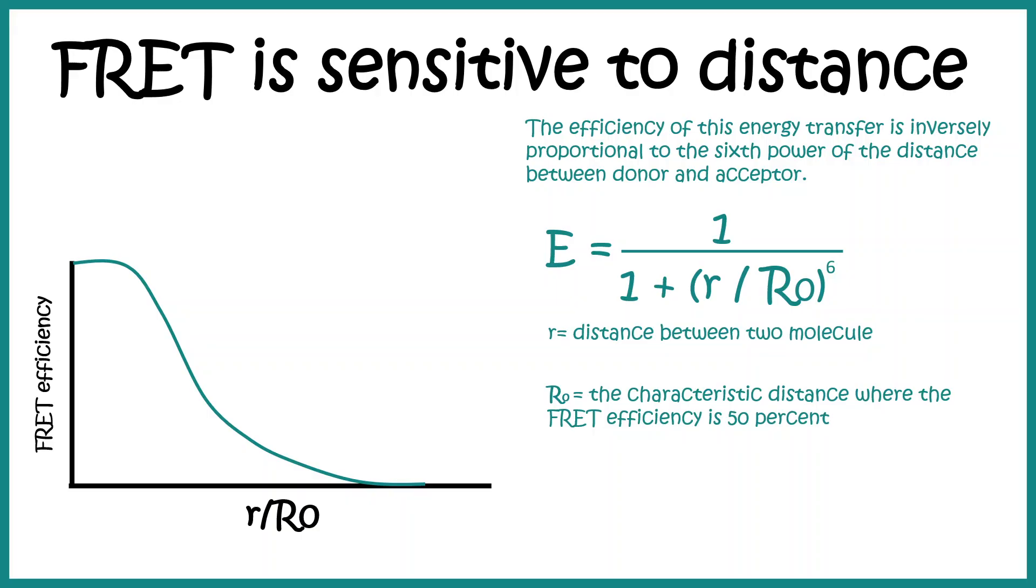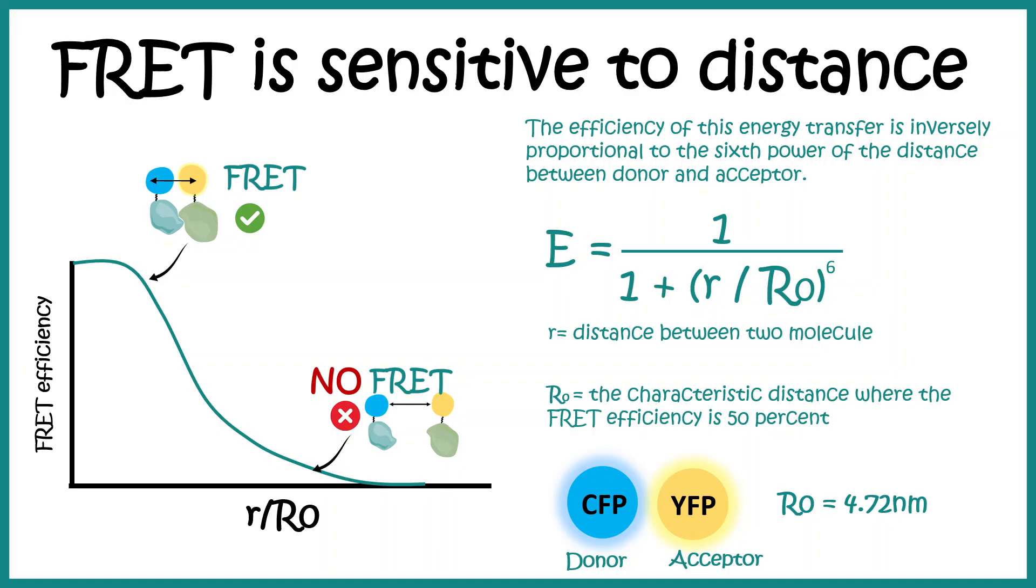If you try to understand this from a graphical point of view, we can see the graph looks like this. With the increase in distance between two molecules, the FRET would be diminished or there would be almost no FRET. The R0 is a property of the donor and acceptor pair. For example, if we use the cyan fluorescence protein and yellow fluorescence protein pair, the R0 would be roughly around 4.72 nanometers.